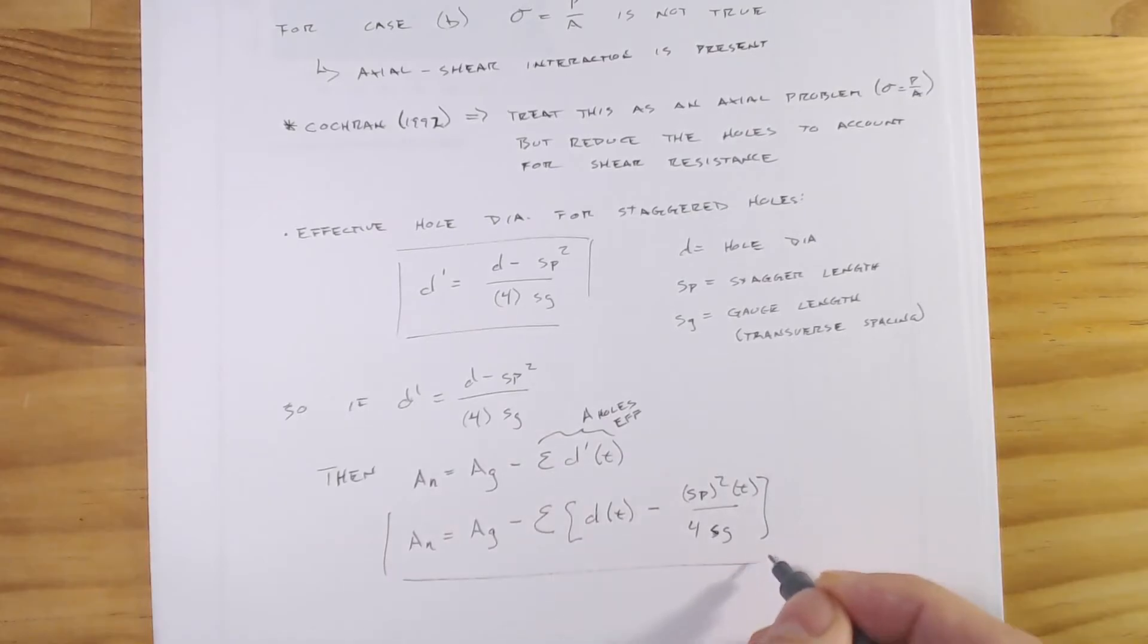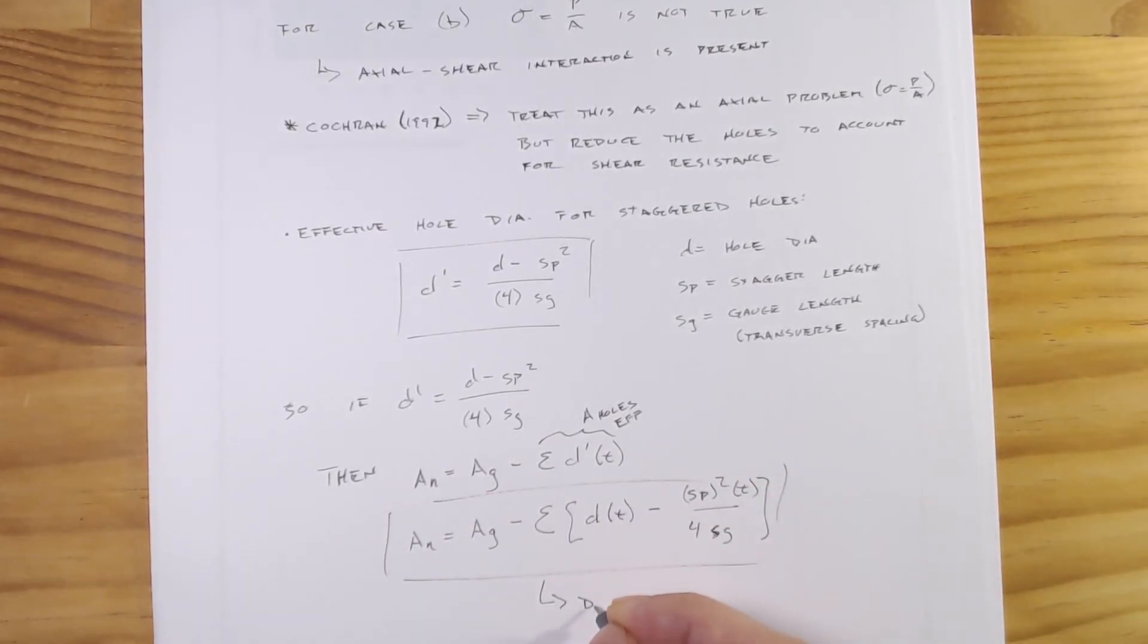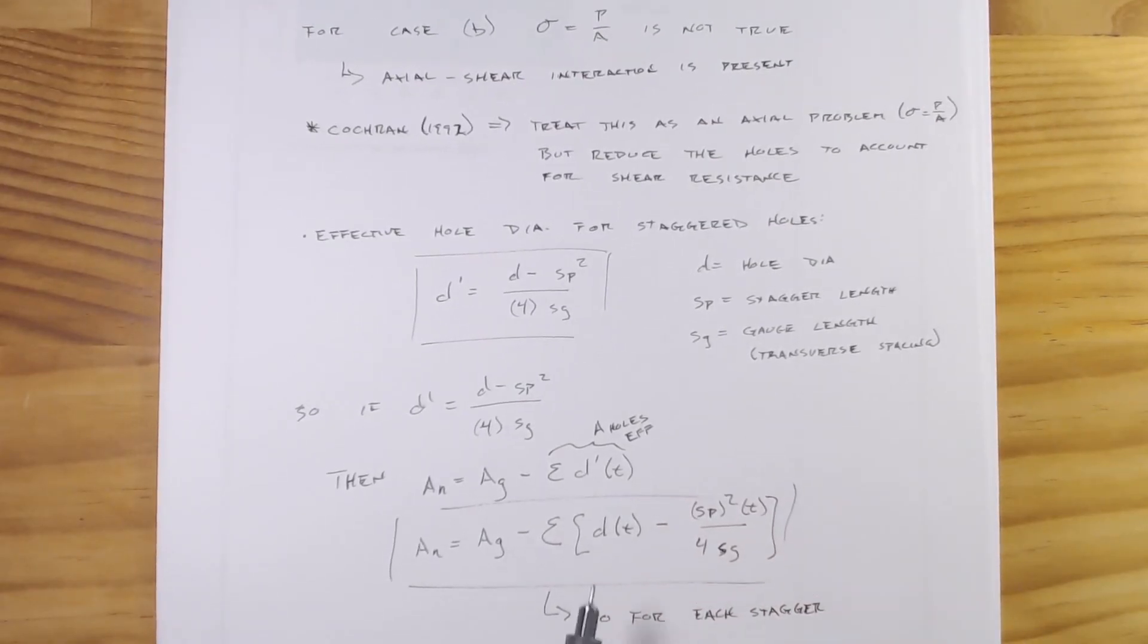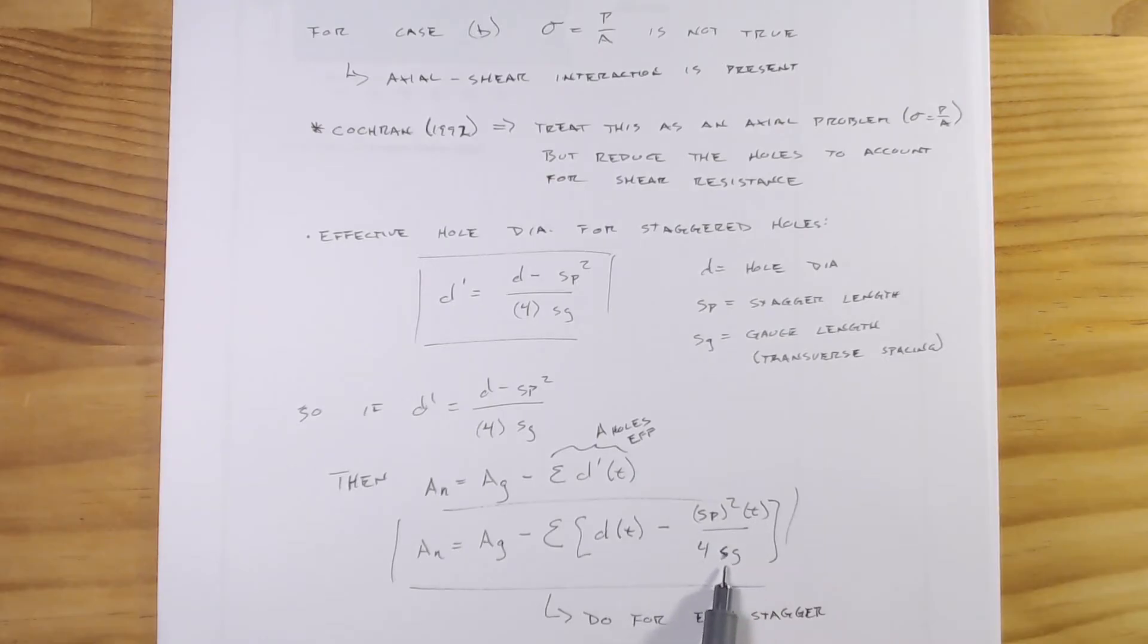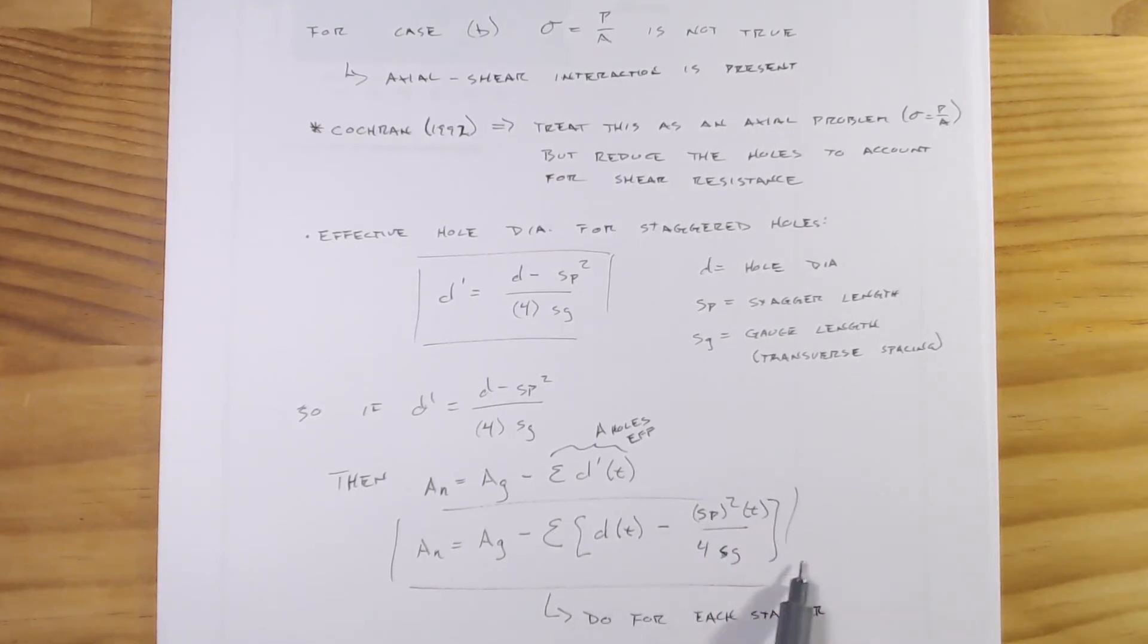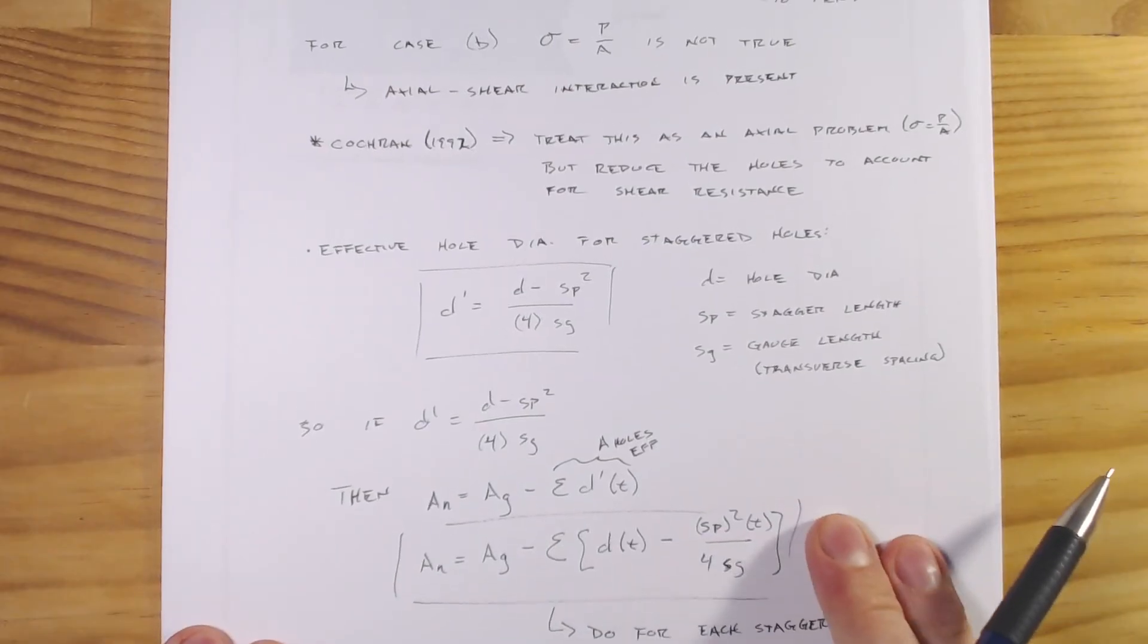And effectively we will do this for each stagger. And one thing to note, we have a minus, a negative. Effectively what this is doing, this sp² over 4sg times the thickness of the steel, is effectively adding area to our net area there. So that's our overview of this. I think it'd be a little bit easier to show you how to use this if we just go through a quick example.